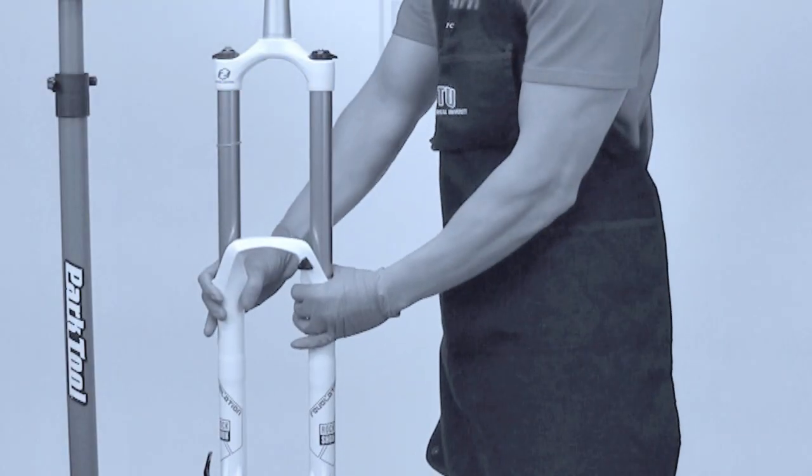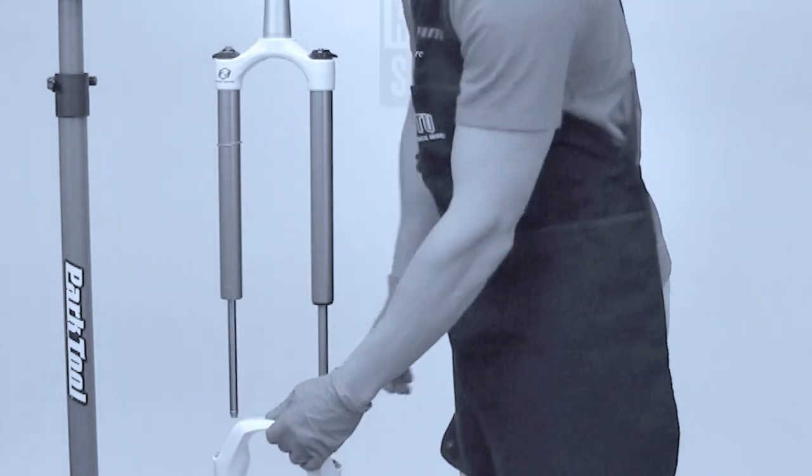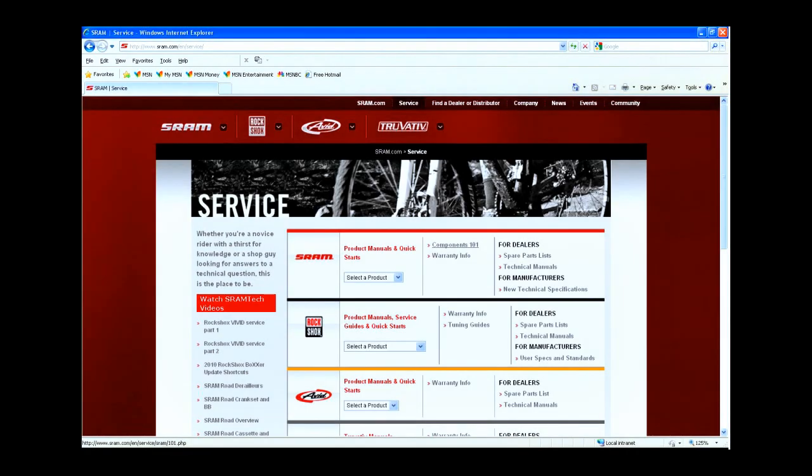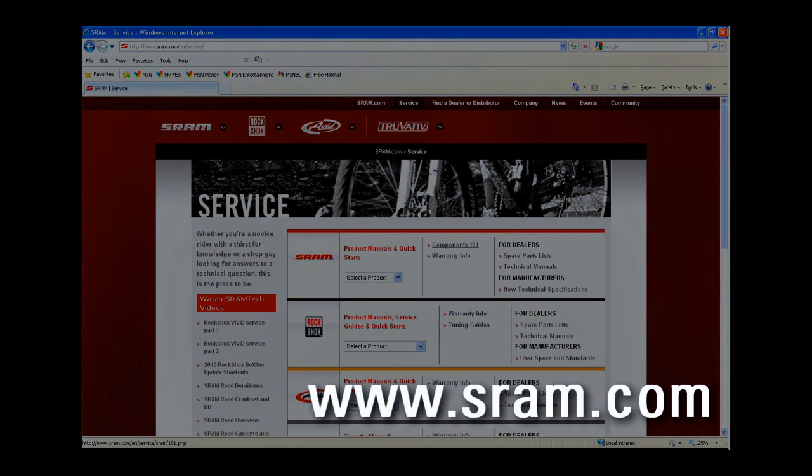At this time, we are going to assume you have already removed the lower legs of your fork. If you haven't, you can find instructions for lower leg removal, as well as installation, in the 2011 RockShox Technical Manual, which is available online at www.sram.com.